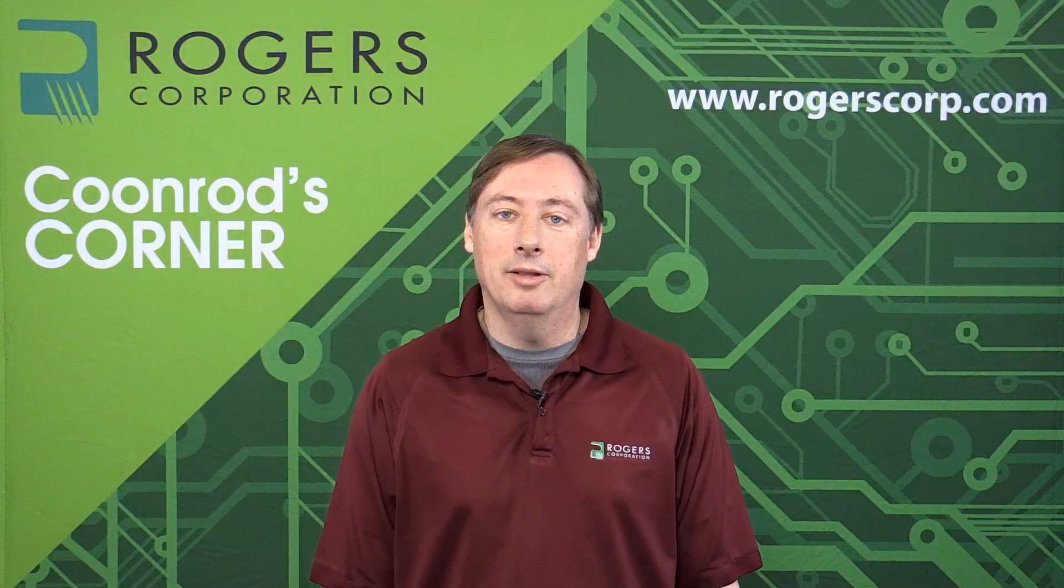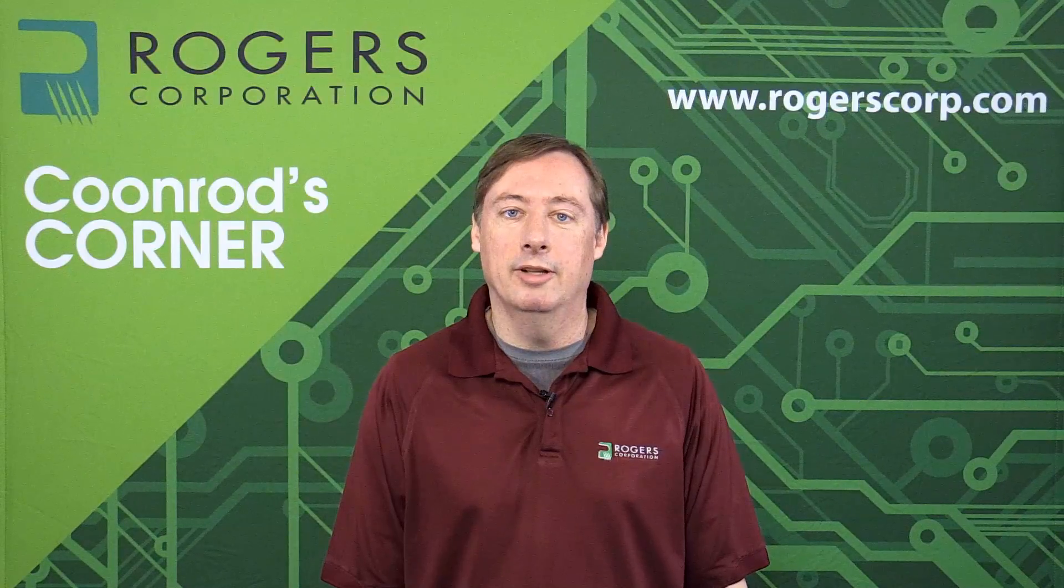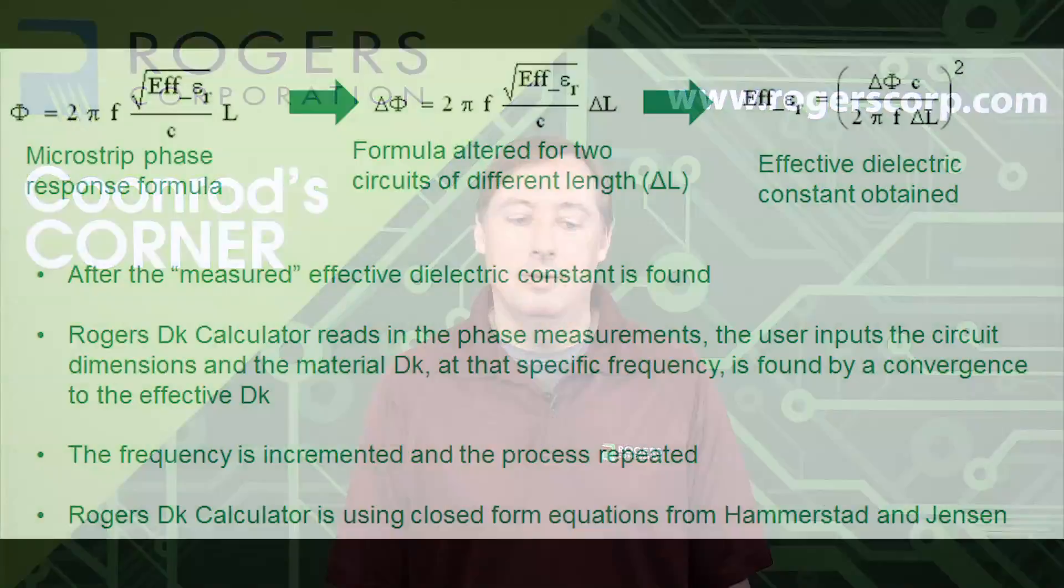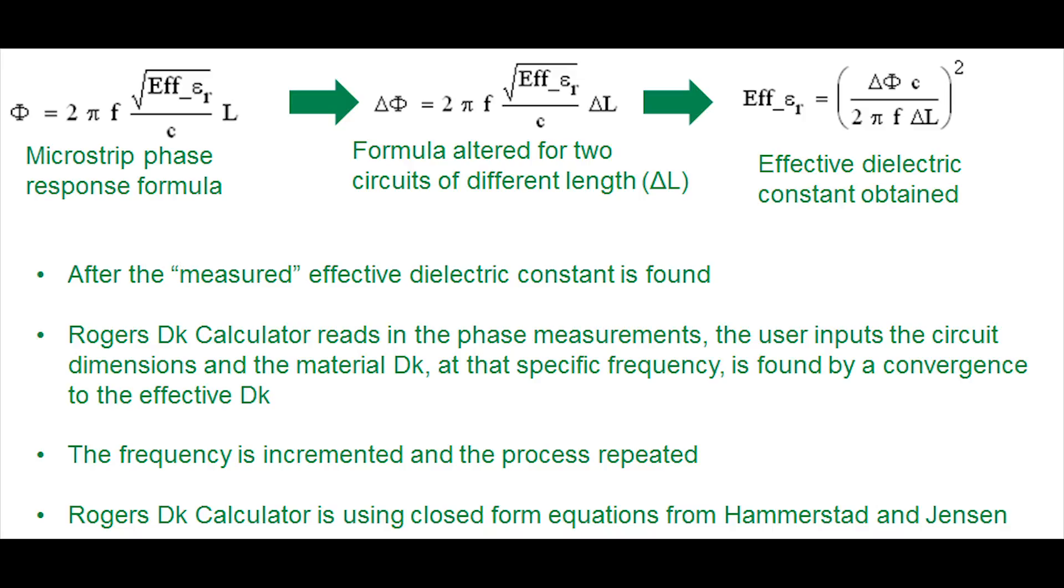The method that we use to determine the dielectric constant from the circuit testing is shown here. The formulas shown here are really based on the microstrip phase response formula on the left. Then we rearrange that formula in the middle to account for circuits of two different lengths. The different length is the ΔL and the variable Δφ is the difference in phase angle measurement of these circuits at a specific frequency f, and c is the speed of light in free space. Then we rearrange that equation to get the effective dielectric constant of the circuits being measured.